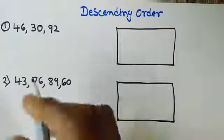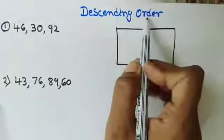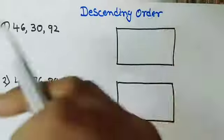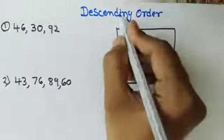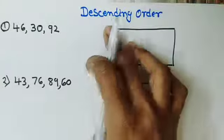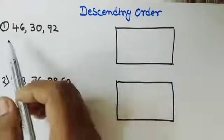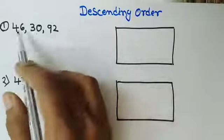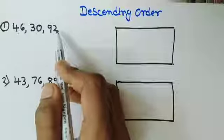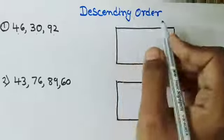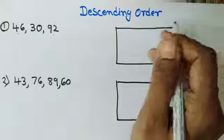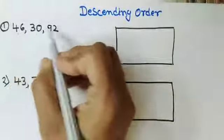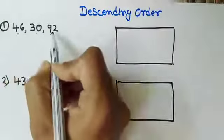Here, the first question is of descending order. Descending order means numbers arranged from bigger to smaller. So how to arrange these numbers in descending order? Here we have the first question: 46, 30, 92. We have 3 numbers. For putting in descending order, first you have to find the greatest number, because descending order means greatest to smallest. So we have to compare all these 3 numbers with each other.